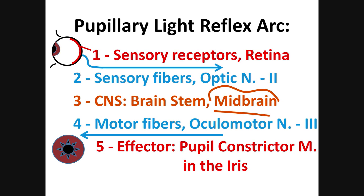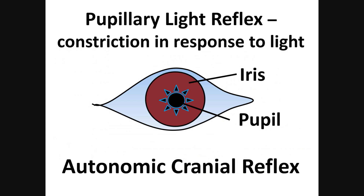If something is wrong with any of these parts — including the cranial nerves or the brain — the reflex may disappear. Checking the reflex is like examining the complete pathway. Is there a skull fracture that damaged the nerve? Is there a stroke in the midbrain that destroyed the integration center? These are the kinds of questions physicians ask when checking the pupillary reflex.